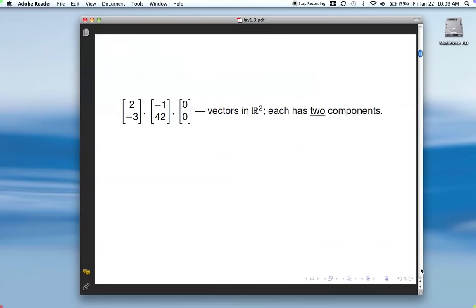So for example, here are 3 vectors in R^2. You know they're in R^2 because they're vectors with 2 components. Each component's a real number. And here they're vectors in R^3 because they have 3 components.